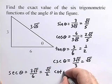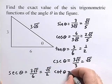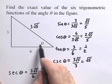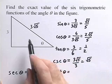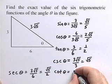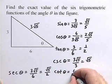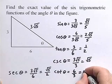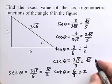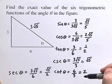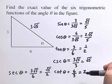The cotangent of theta will be the adjacent side over the opposite side, so we'll get 6 divided by 3, which is equal to 2. So we have our six trigonometric function values.